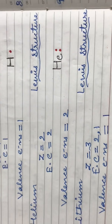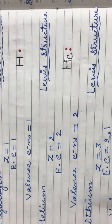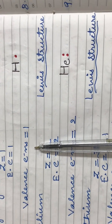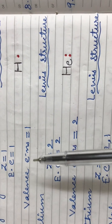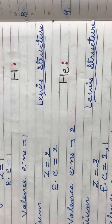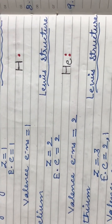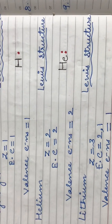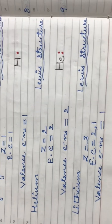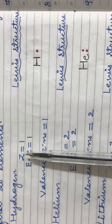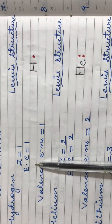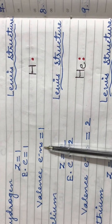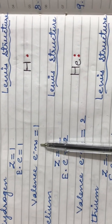At any point, if you are not clear with the concept of electronic configuration or valence electrons, links for those topics are mentioned in the description. You can go to those links to understand the basics. Here, Z stands for atomic number, EC stands for electronic configuration, and E-NS stands for electrons.